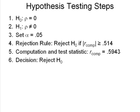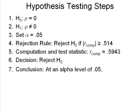So step six, we just write: reject the null hypothesis. Now step seven is a three-step final statement conclusion. We always start by saying what our alpha level is. So we would say at an alpha level of .05. That's just the way they always start.